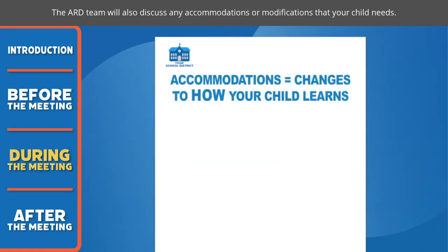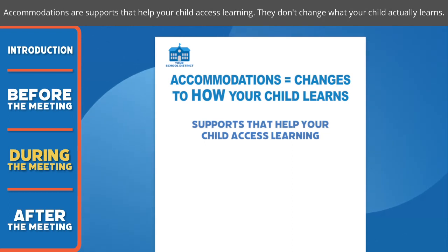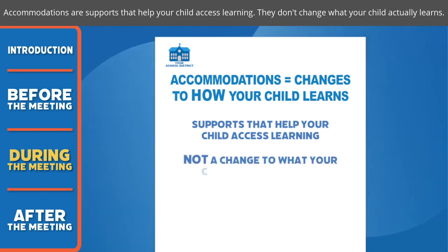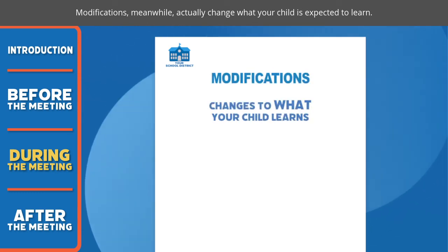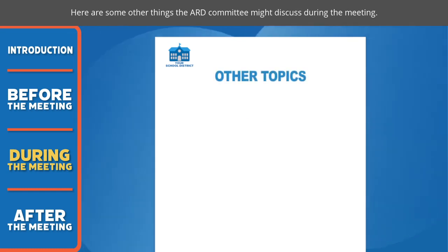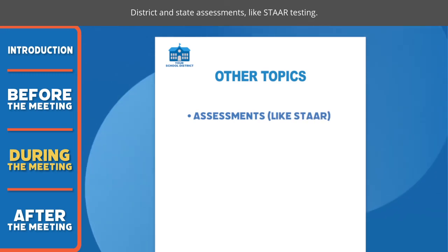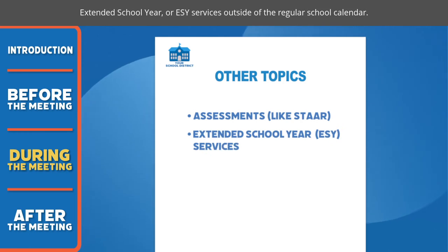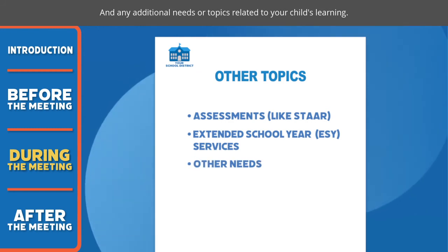The ARD team will also discuss any accommodations or modifications that your child needs. Accommodations are supports that help your child access learning — they don't change what your child actually learns. Modifications, meanwhile, actually change what your child is expected to learn. Other topics the ARD committee meeting might discuss include district and state assessments like STAR testing, extended school year or ESY services outside of the regular school calendar, and any additional needs or topics related to your child's learning.